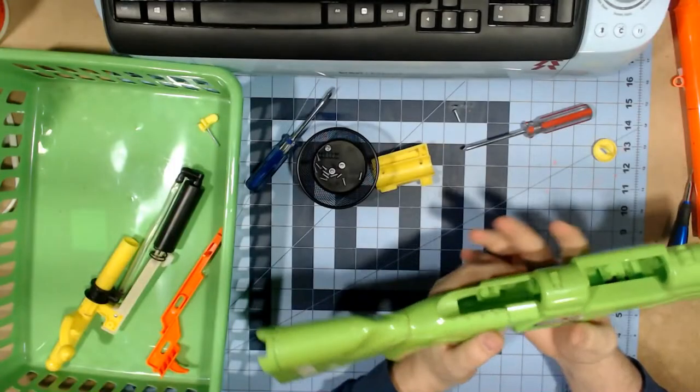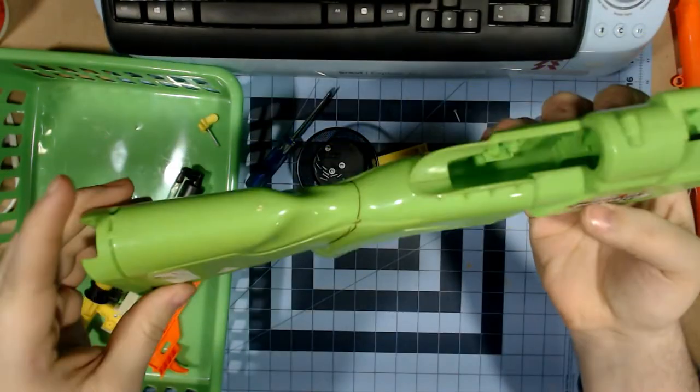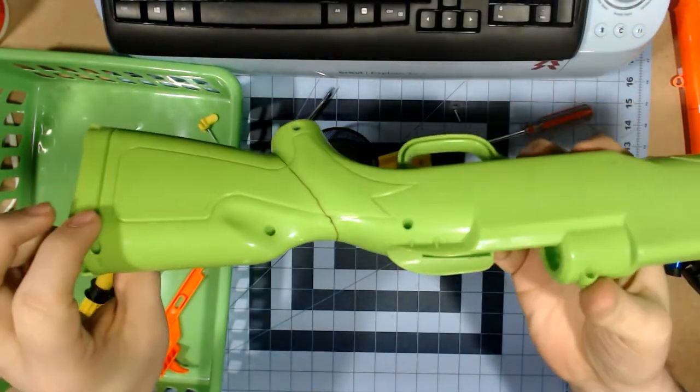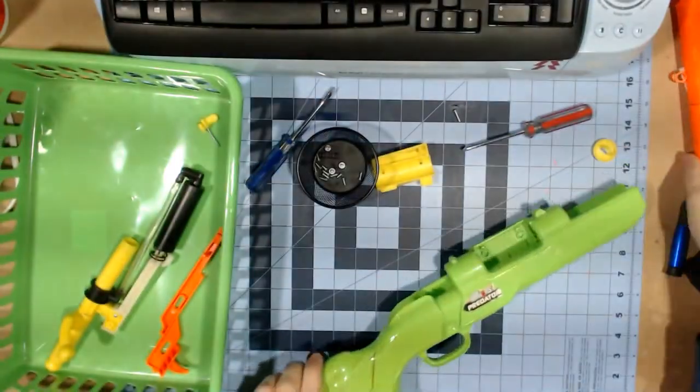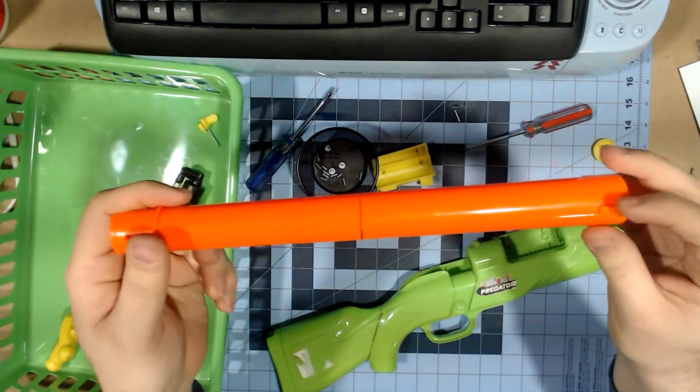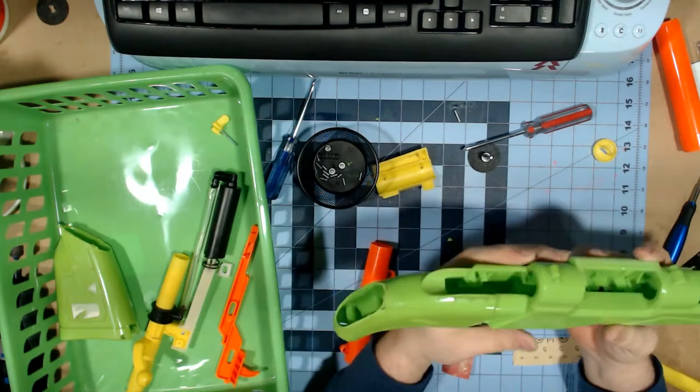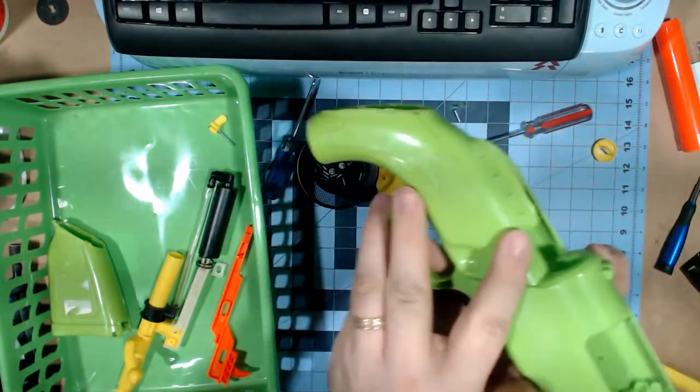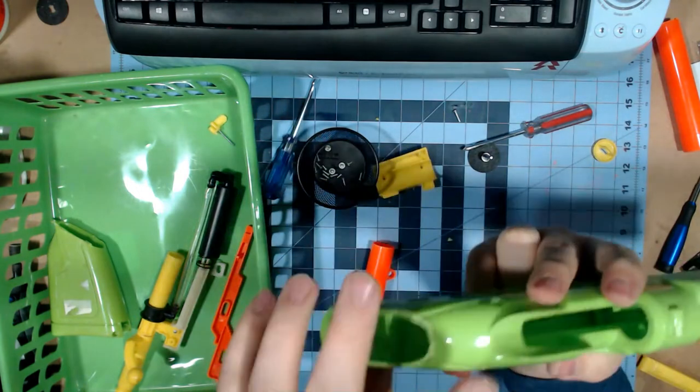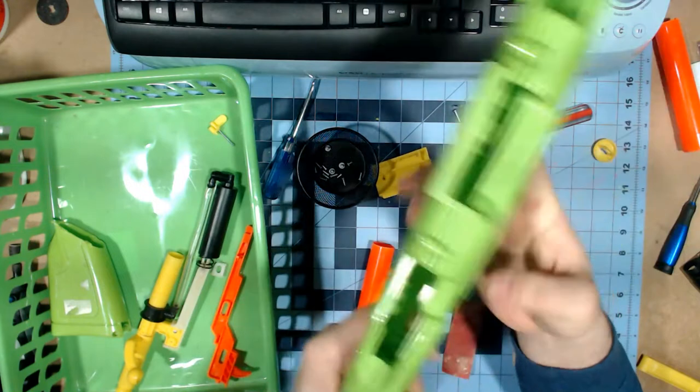So I've drawn some lines on the blaster to know where I'm going to cut off. This is just taking the stock off, and this is where I'm going to shorten the barrel down to. And here we have the stock cut down. It looks a little rough. I've got to do some sanding on it, but this is just to show how it is and how it's going to fit in the hand.